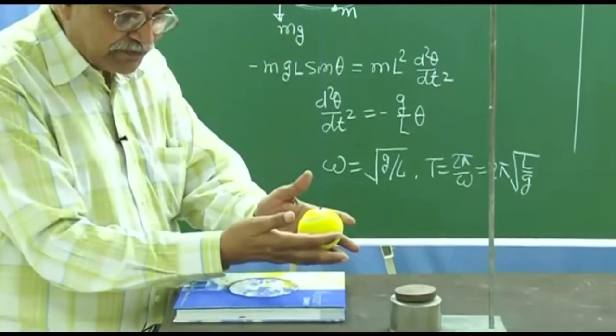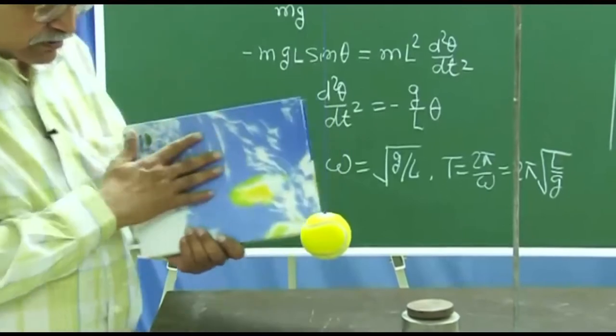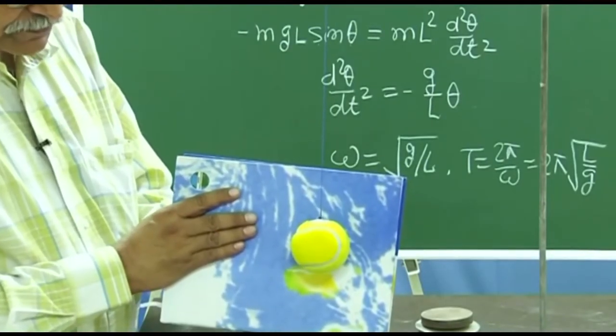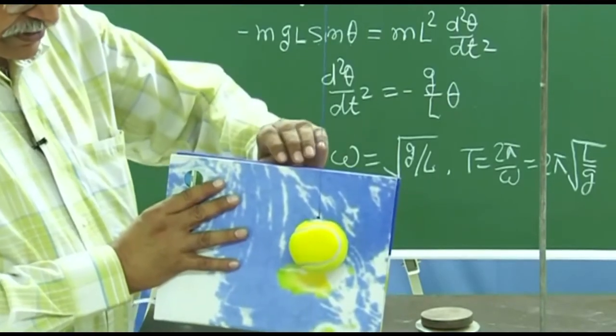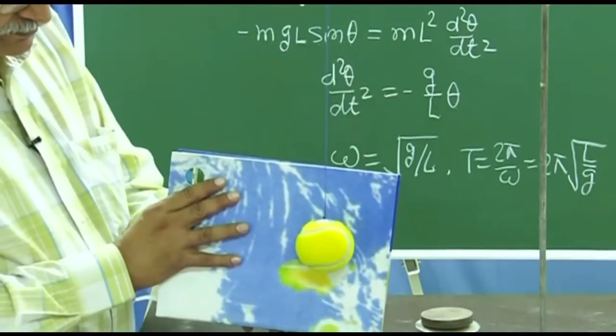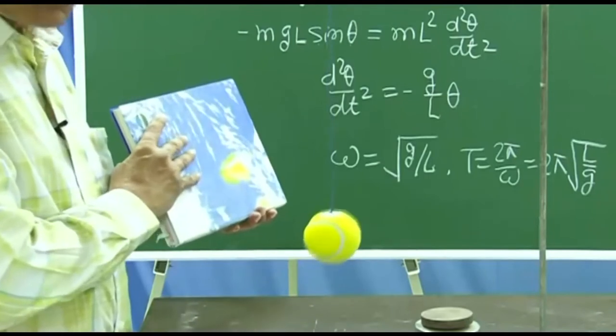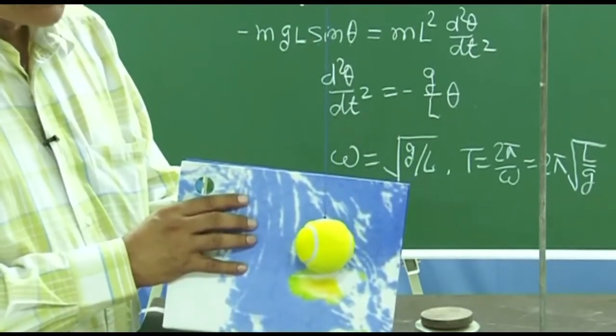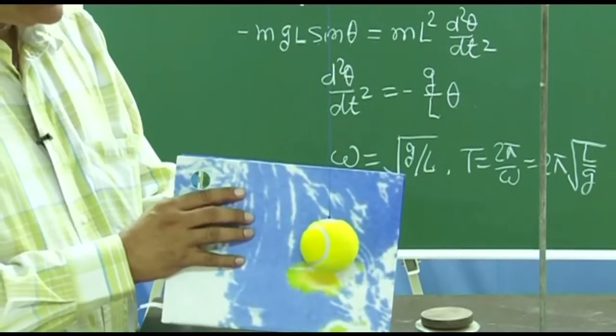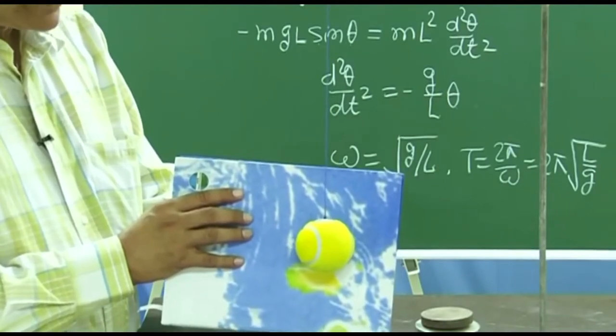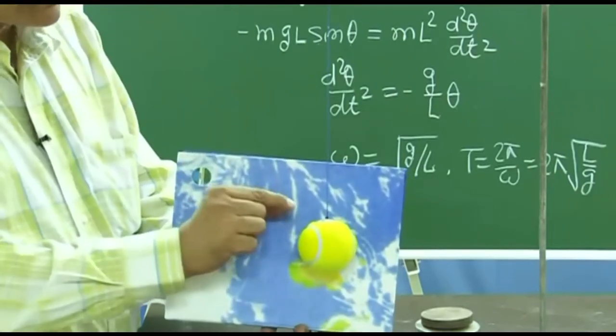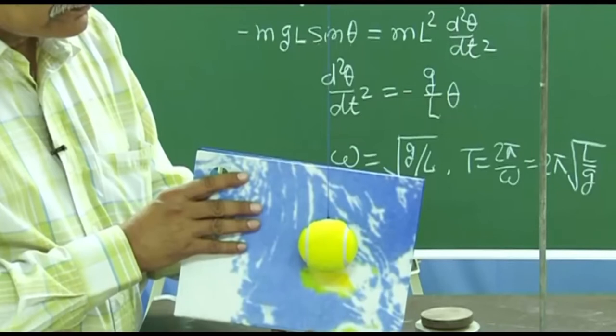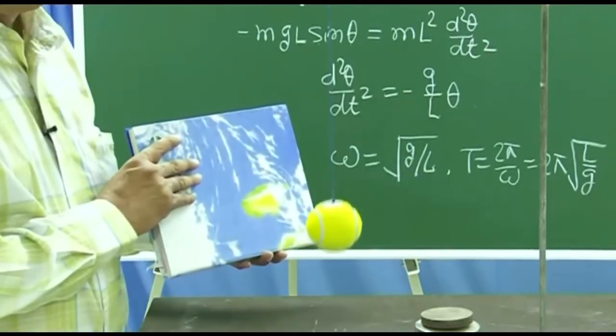So one of the efficient ways is that you take some kind of a textbook or a notebook and then push this ball to whatever amplitude you want, and then move this notebook rapidly in the opposite direction. And see how smoothly it goes. So the idea is that when we release it, it should have V equal to 0, theta equal to the amplitude, and then it should start with V equal to 0. And for that you don't have to apply any force on this. So gently remove this so that this contact is broken. And it goes in a much smoother path.